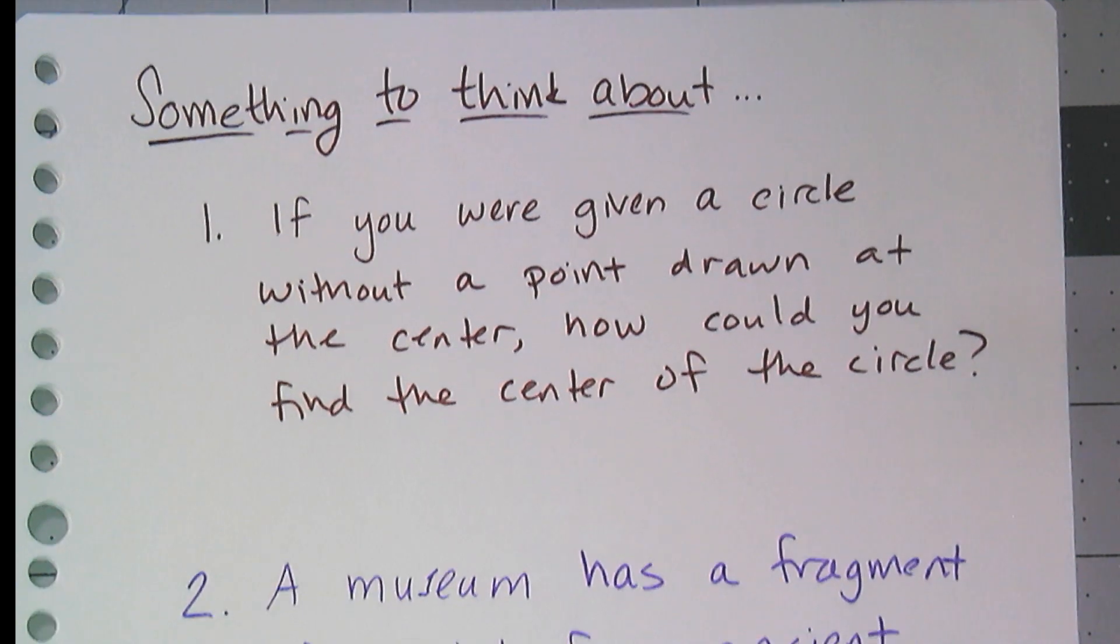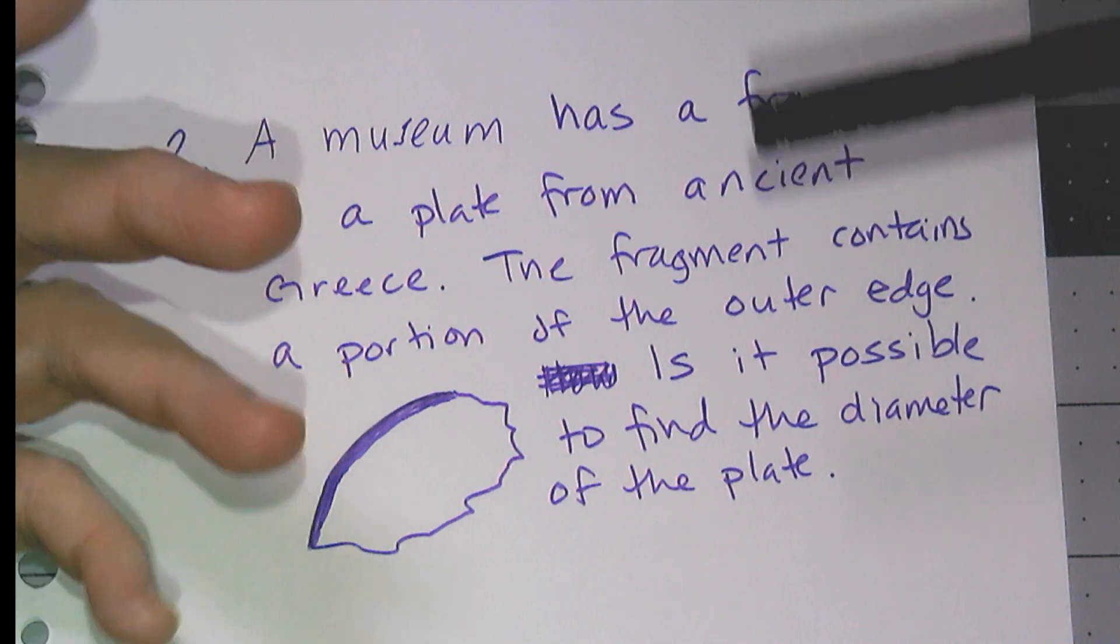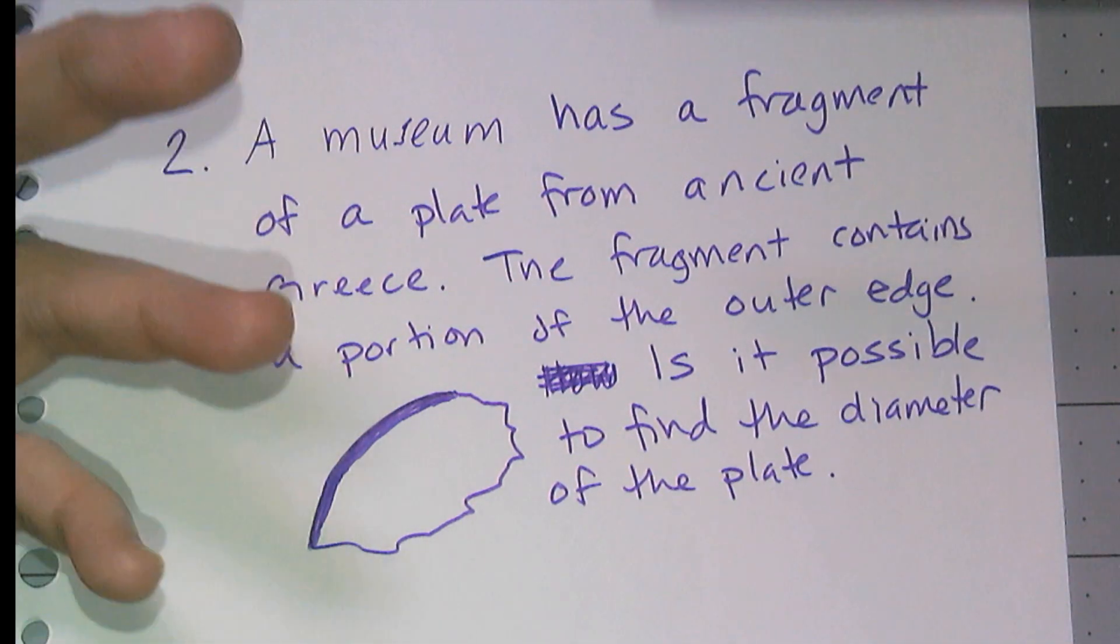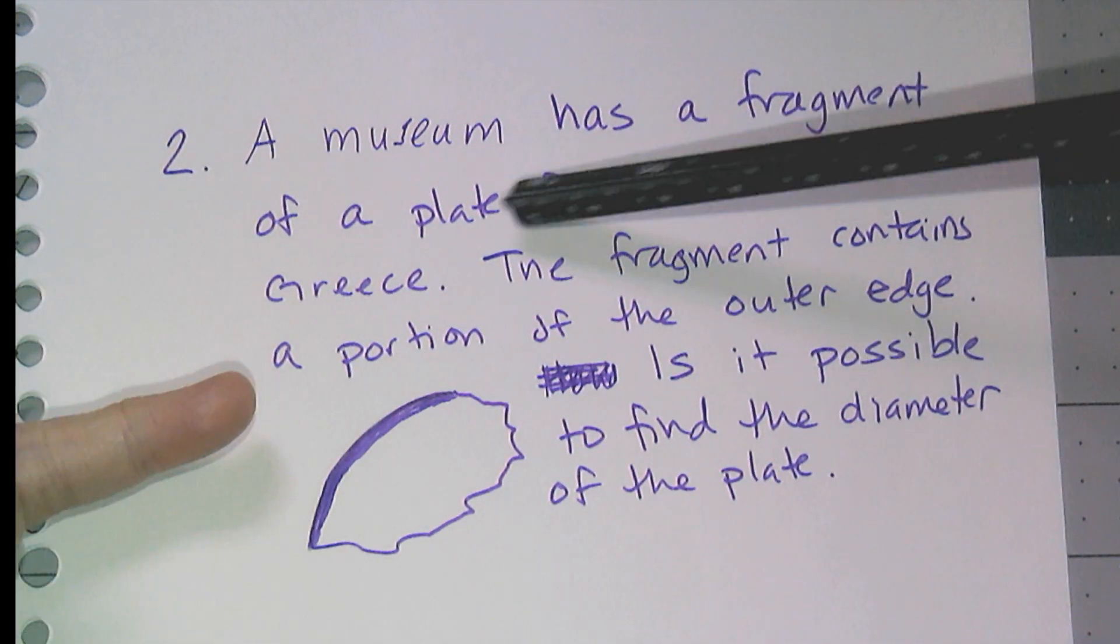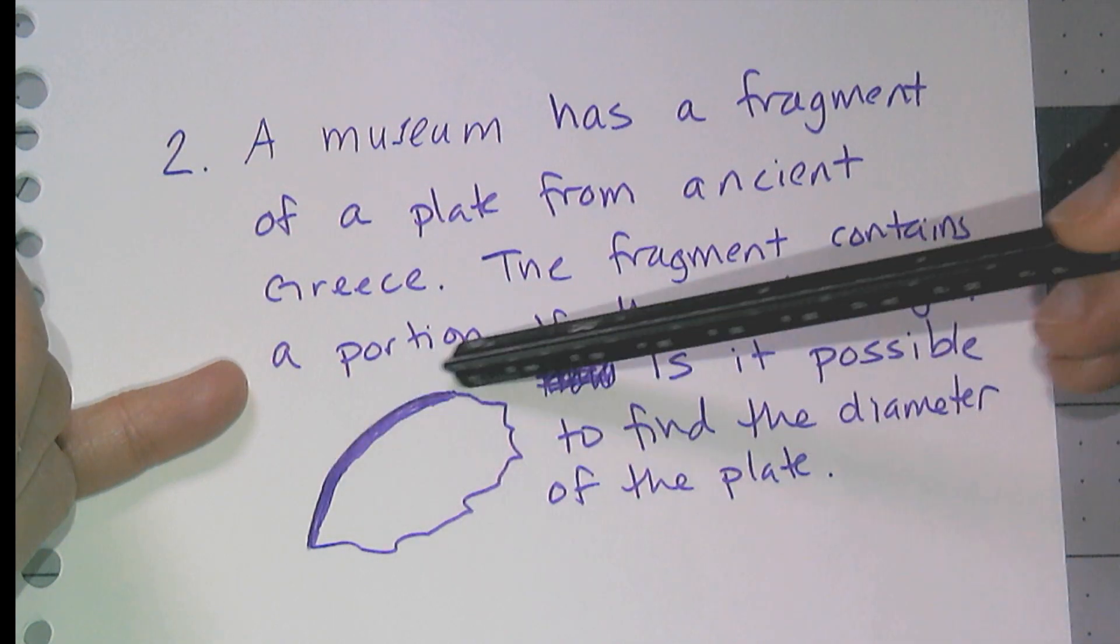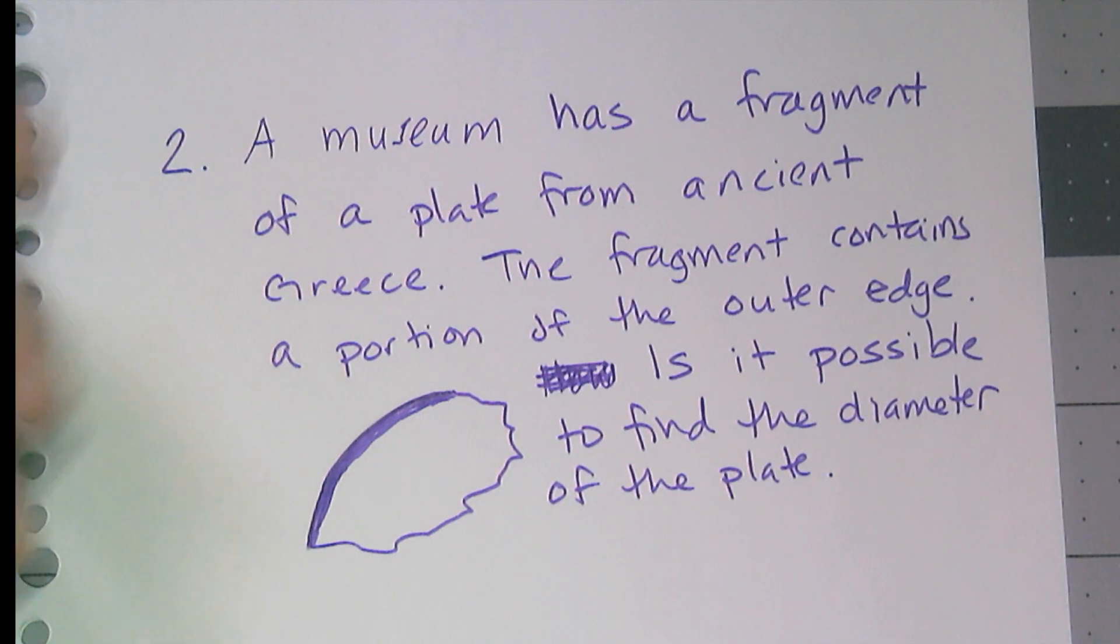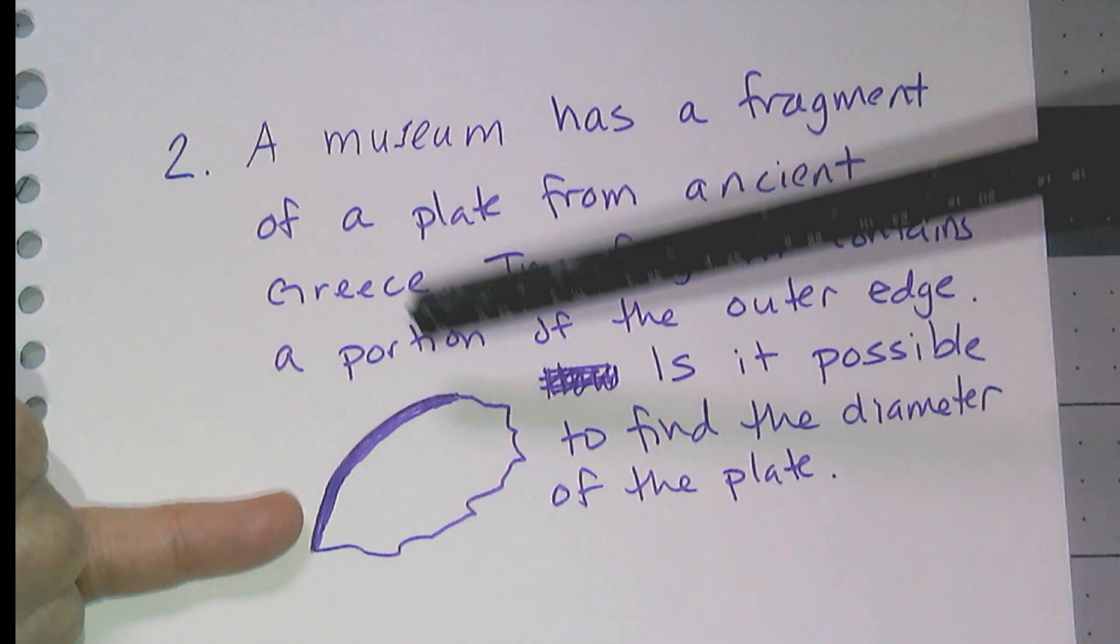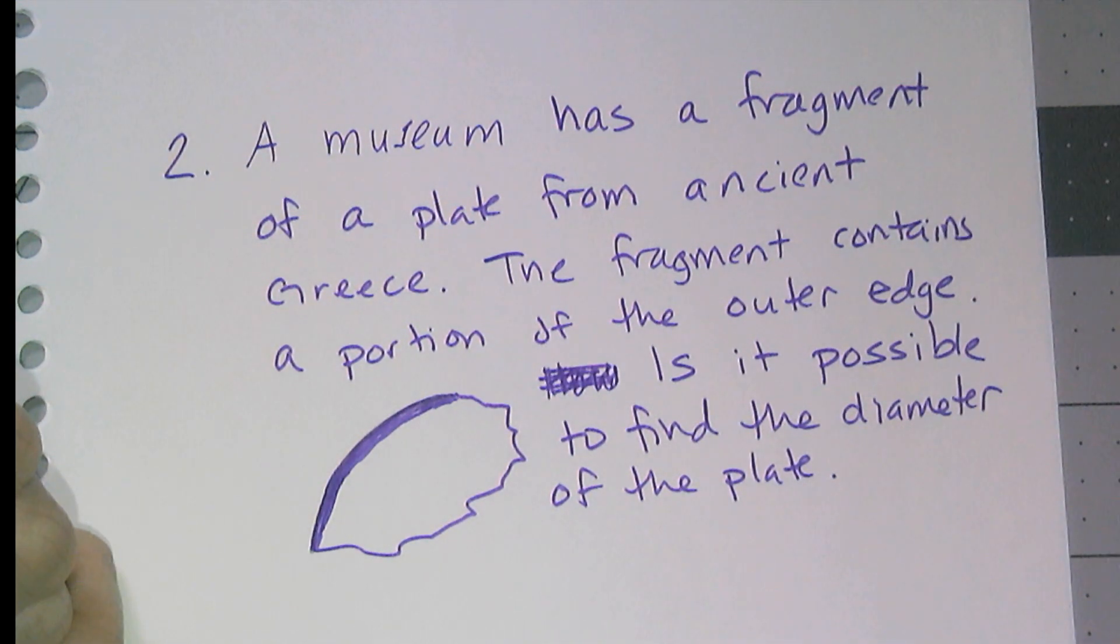Now another one, an actually application one, which I think is actually kind of cool. So we know that when archaeologists excavate sites, they find pieces and fragments of pottery. So let's say a museum found a fragment of a plate from ancient Greece. And the fragment contains a portion of the outer edge of the circle. And is it possible to find the diameter of the original plate? And I don't know, maybe make a recreation of the plate to sell at a museum's gift shop. Can you find the diameter of a circle if you're just given a portion or an arc of the circle?